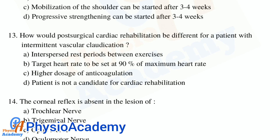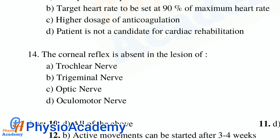Question number 15: The corneal reflex is absent in the lesion of which nerve? Option A: trochlear nerve. Option B: trigeminal nerve. Option C: optic nerve. Option D: oculomotor nerve. The correct answer is option B, trigeminal nerve.